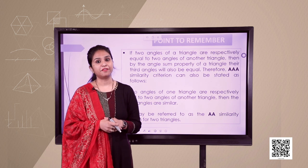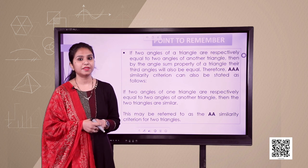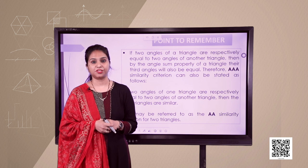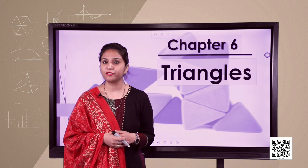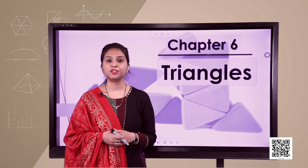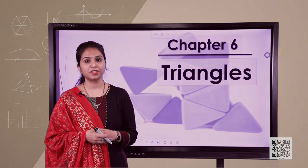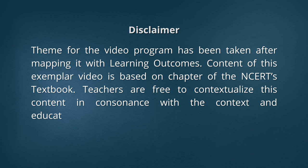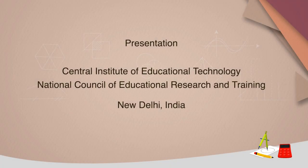So in this session we have learnt two very important theorems: the converse of Basic Proportionality Theorem and similarity criteria number 1, which is AA or AAA criteria. In our next session we are going to discuss two more similarity criteria — SSS criteria and SAS criteria. Thank you so much for watching.